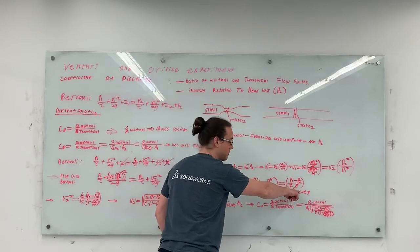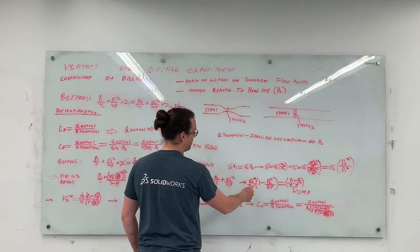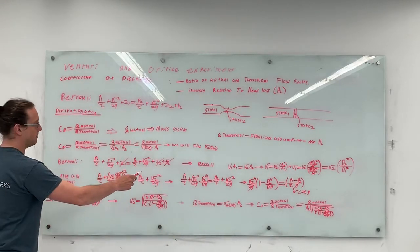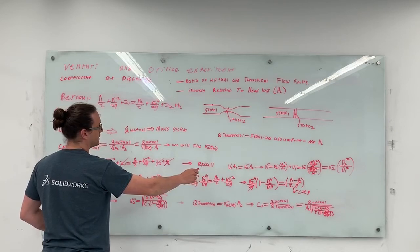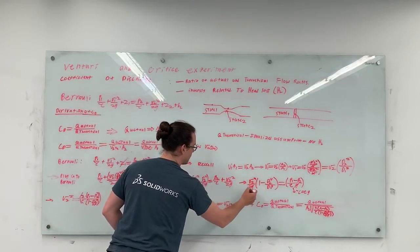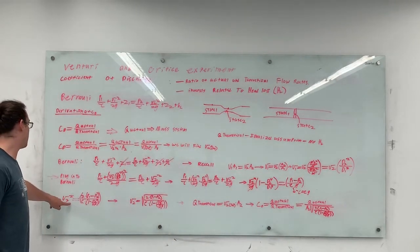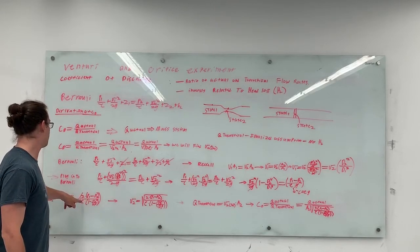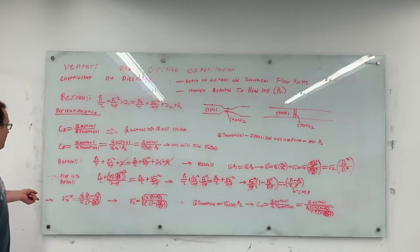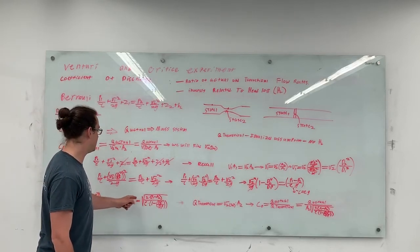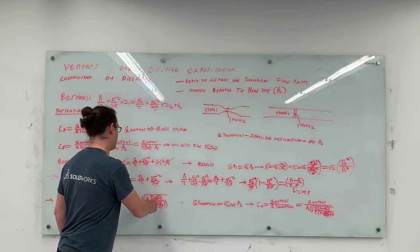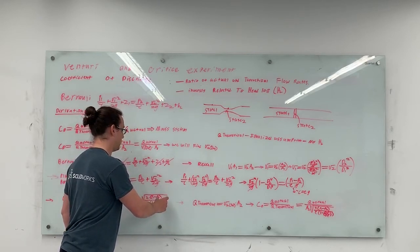Since gamma equals rho times g, we can eliminate g from each side. Multiplying each side by 2 over the quantity (1 minus d2⁴ / d1⁴), we get v2 squared equals 2 times (p1 minus p2) over rho times the quantity (1 minus d2⁴ / d1⁴). Taking the square root, v2 equals the square root of 2 times (p1 minus p2) over the quantity of rho times the quantity of (1 minus d2⁴ / d1⁴).